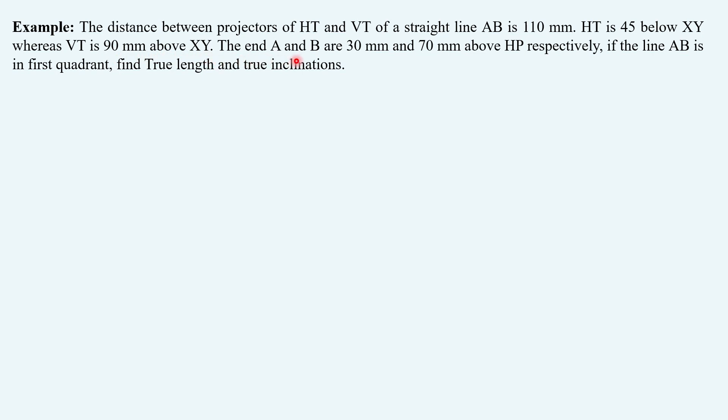The end A and B are 30 mm and 70 mm above HP respectively. If the line AB is in first quadrant, find true length and true inclinations. Let's extract the given data first.